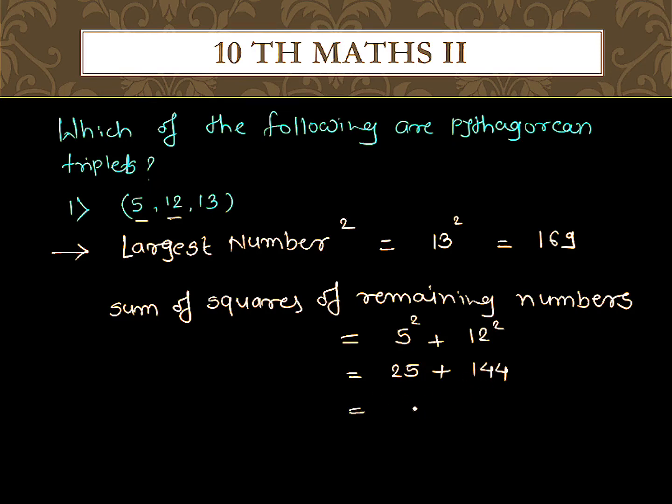So 25 plus 144 is 169. Here the largest number squared is 169, and the sum of squares of the remaining two numbers is also 169.